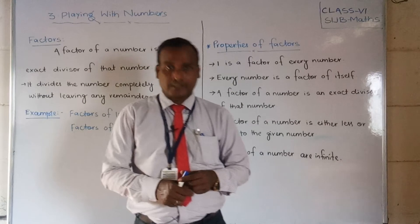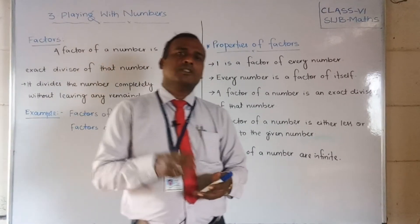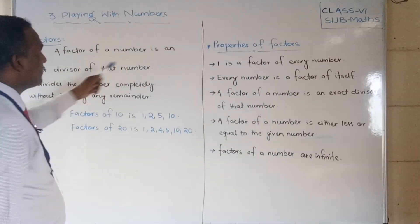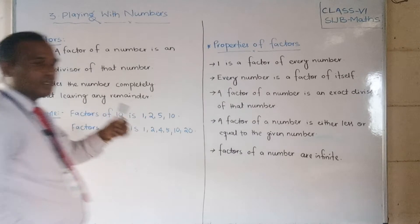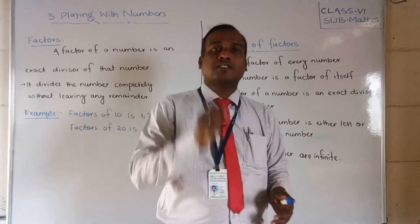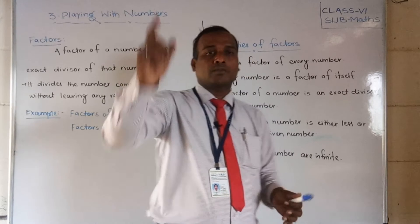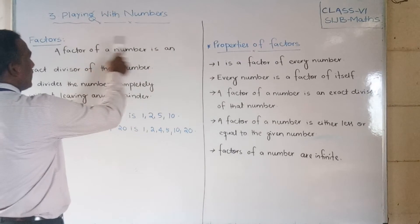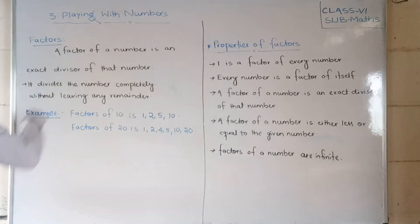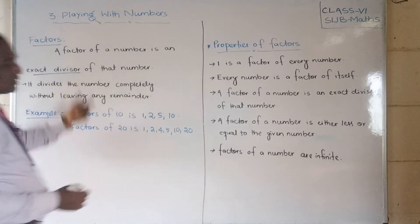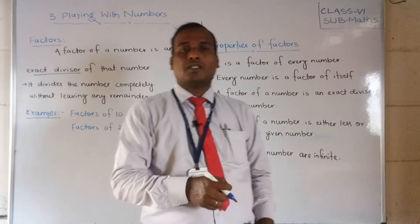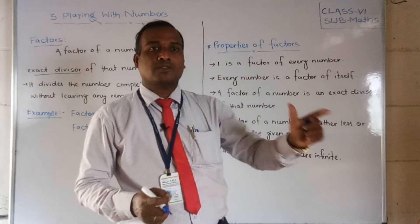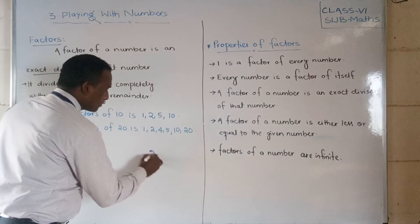So, what is a factor? A factor is a number which exactly divides a given number. The definition of a factor: a factor of a number is an exact divisor. Exact divisor means when we divide that number by the divisor, the remainder is zero — that is why it is called an exact divisor.